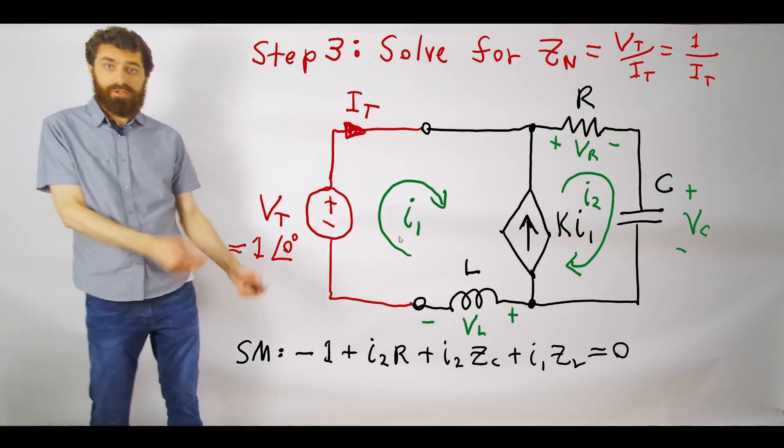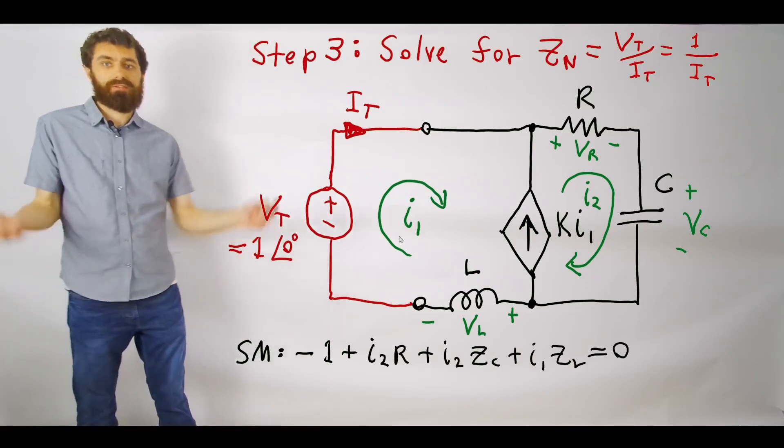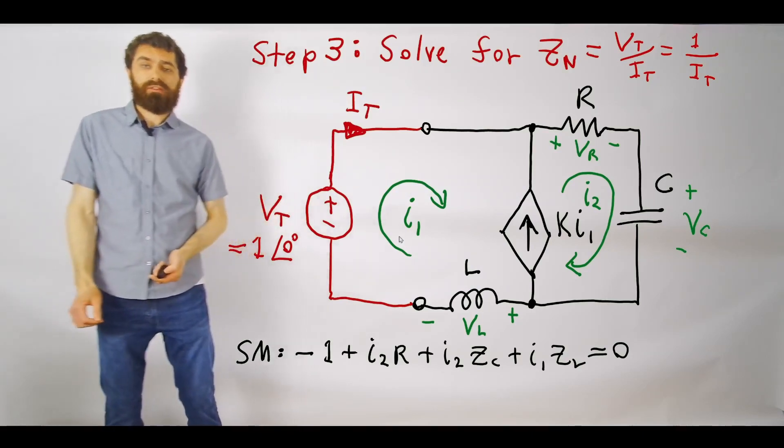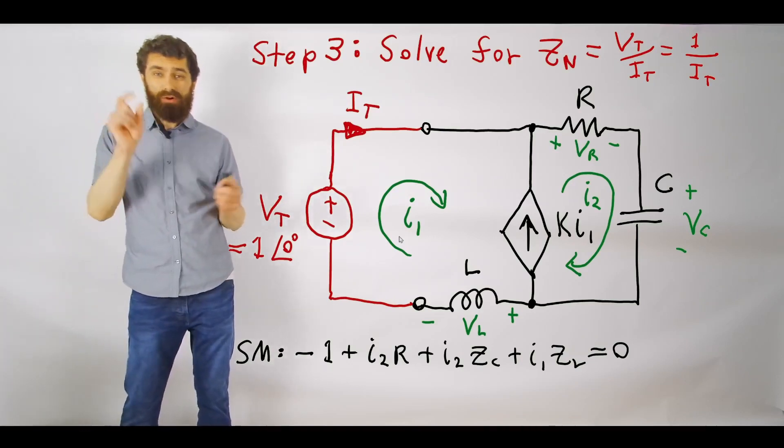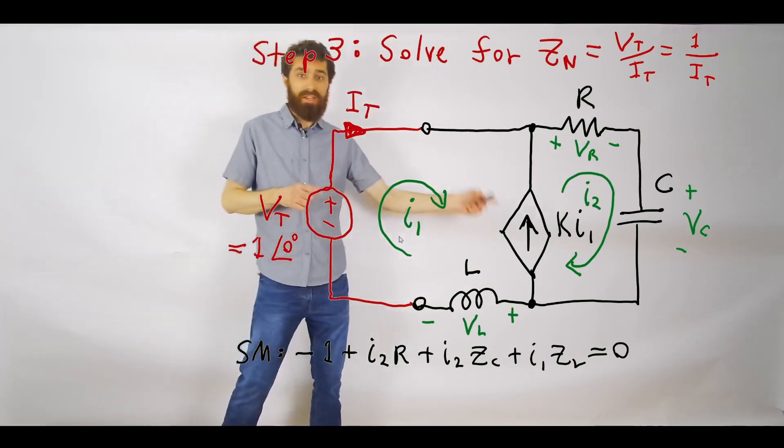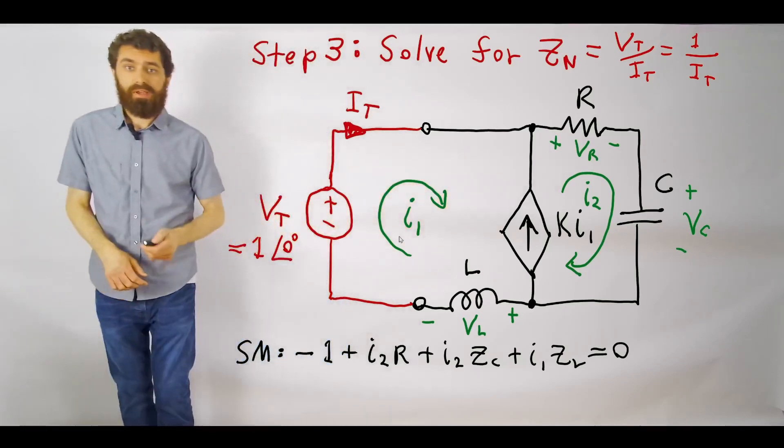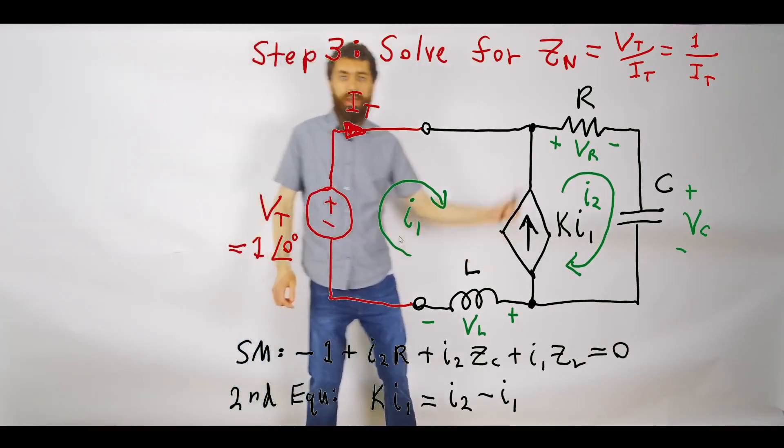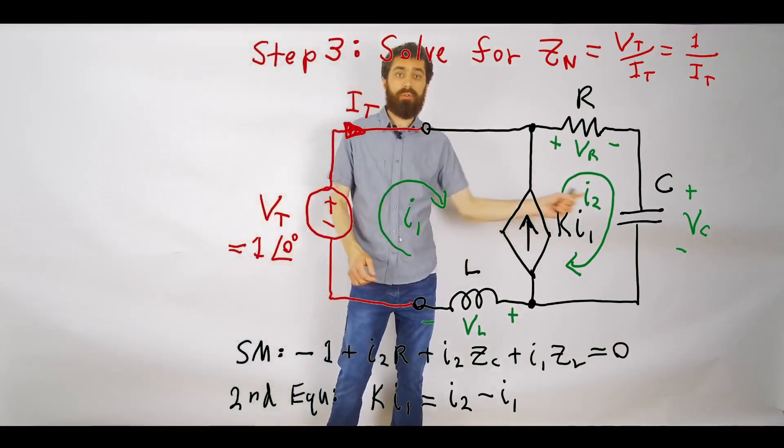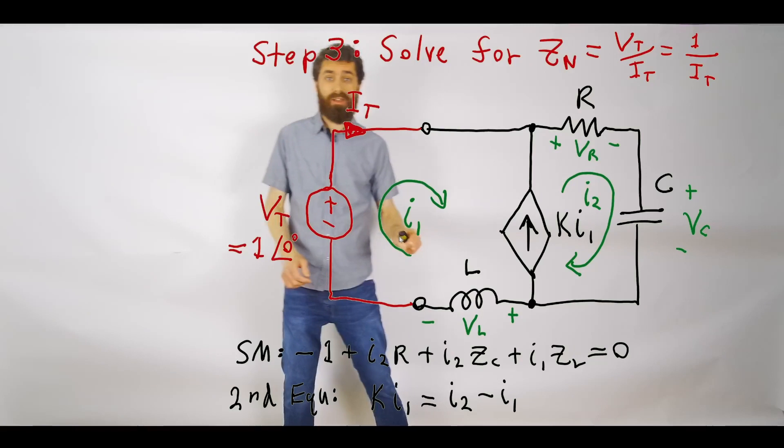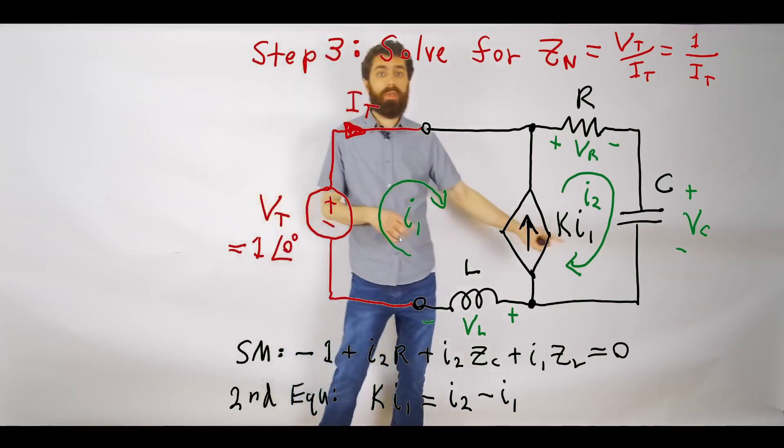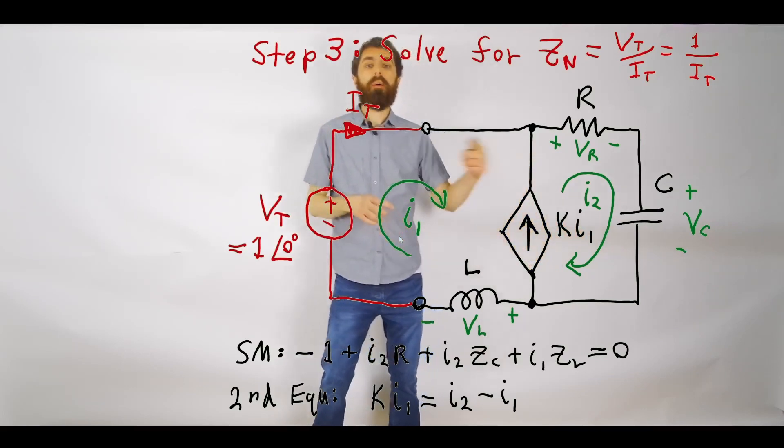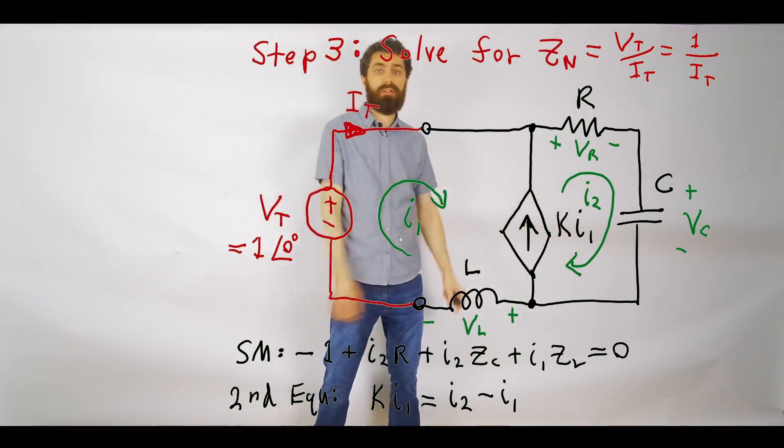Then we've got our one equation there, but we need another equation because we have two unknowns, I1 and I2. Whenever you're doing mesh analysis, you have to express the current source values in terms of mesh currents. That gives you your second equation. We simply say that k i1 is equal to i2 minus i1. That order is really important—it's always the current that is in line with the current source minus the opposing current i1.